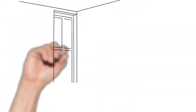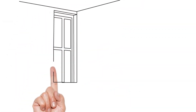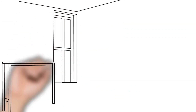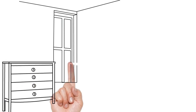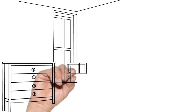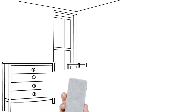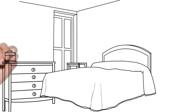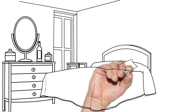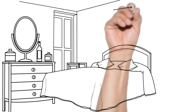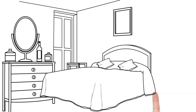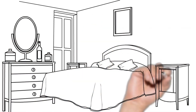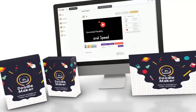Doodle videos, also known as whiteboard animations or sketch videos, are a unique style of animated content that combines hand-drawn illustrations, text, images, and multimedia elements to convey information, tell stories, and engage audiences.